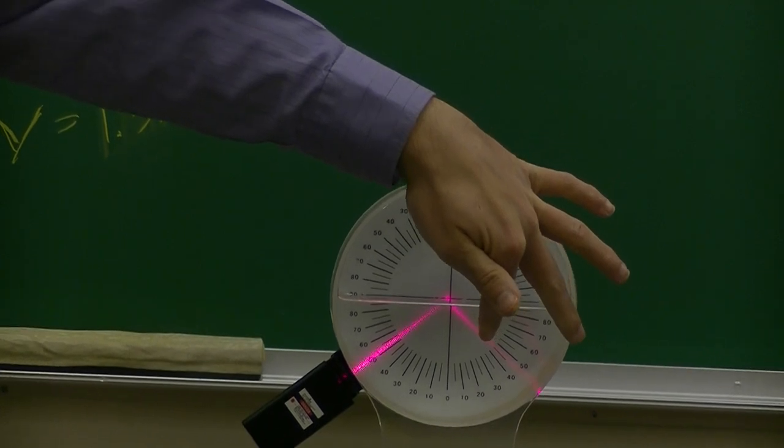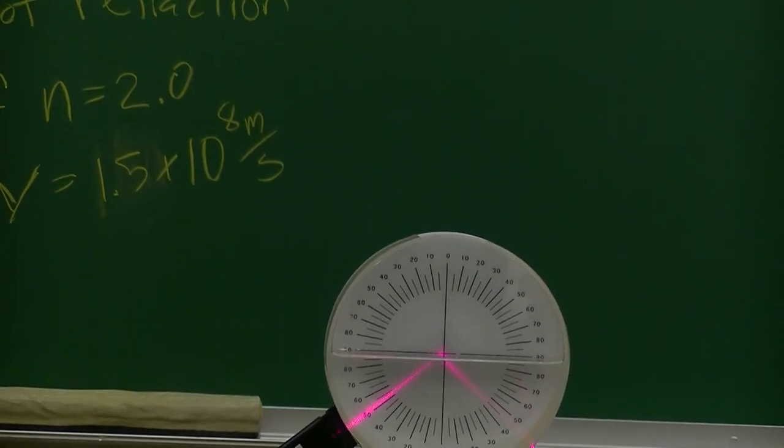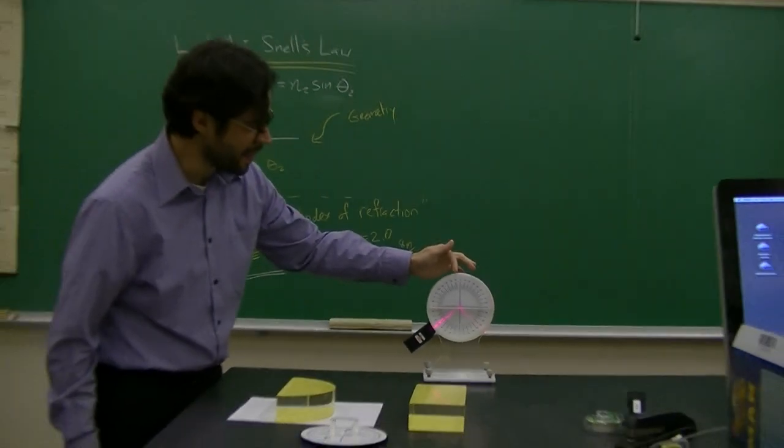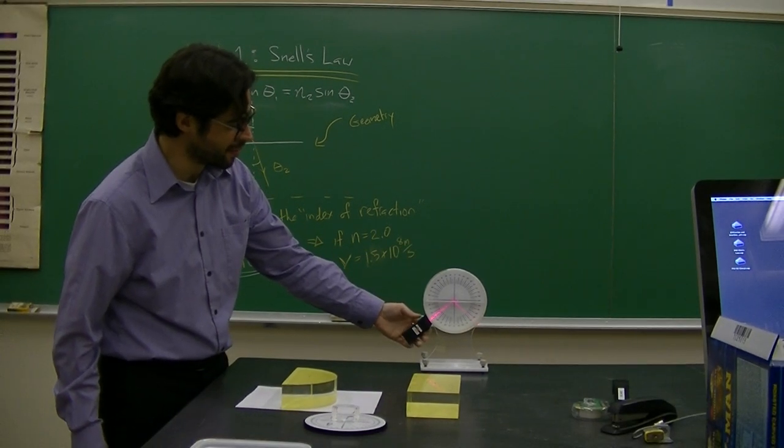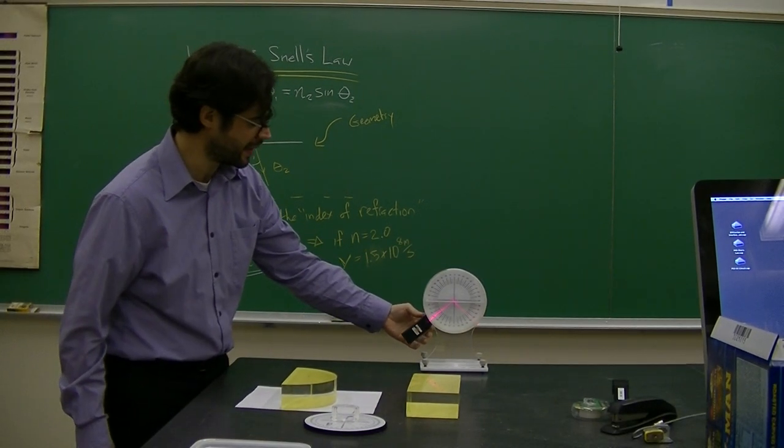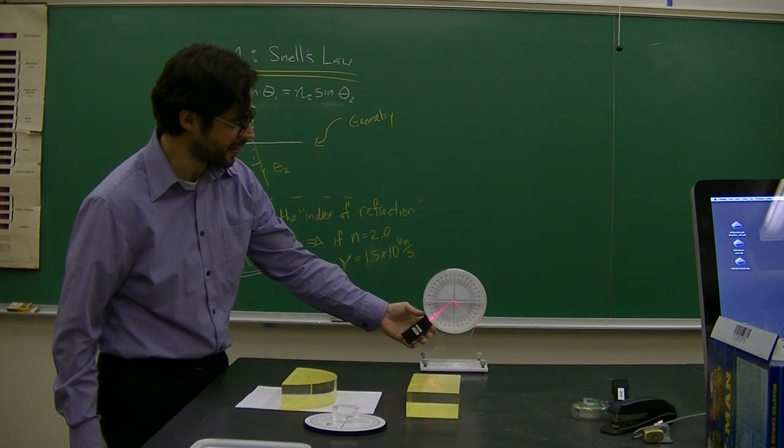I actually have what's called total internal reflection. So that's one of the last things you guys will investigate. So basically, there's an angle that's so big that you break the sign. So sign cannot spit out angles greater than 90 degrees.